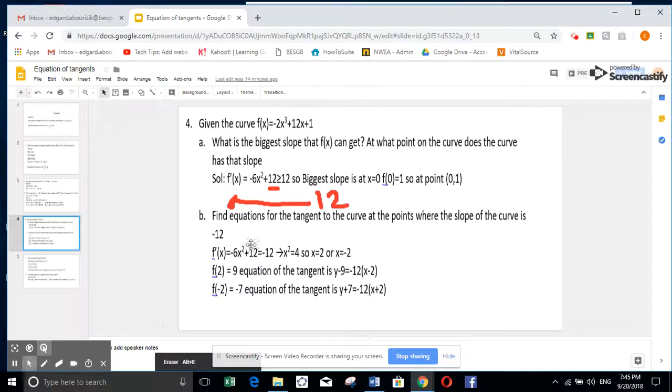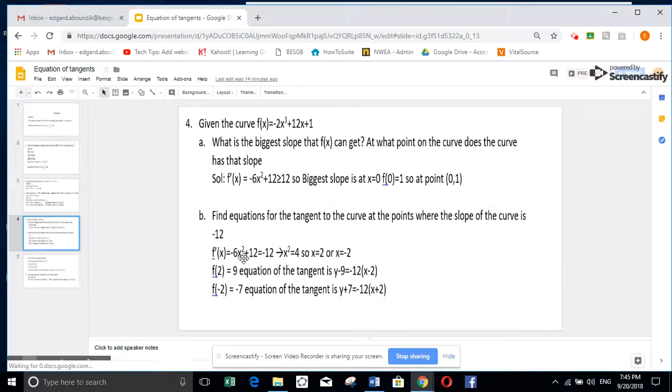In the second one, find the equation of the tangent to the curve where the slope is minus 12. Here, it's the same as we did before. Slope is minus 12. I solve derivative equal minus 12. So I have two values. I have 2 and minus 2, like number 3 we did in a while. So I replace f of 2, I get 9. I replace f of minus 2, I get minus 7.